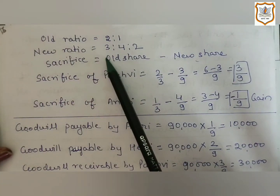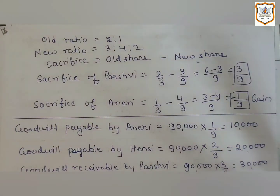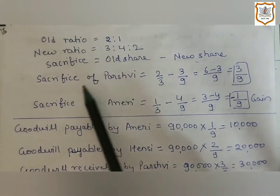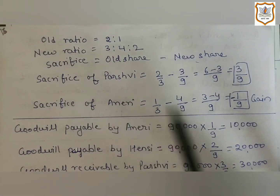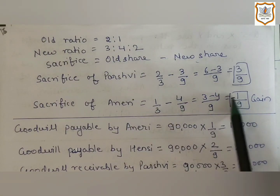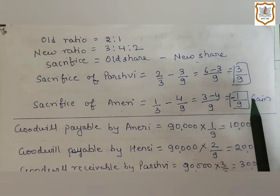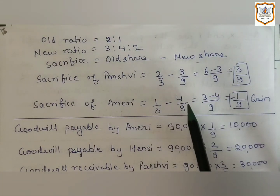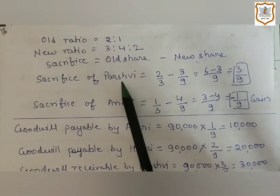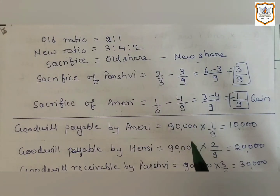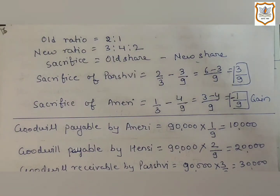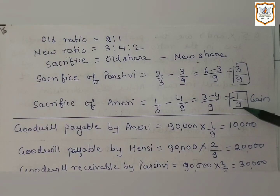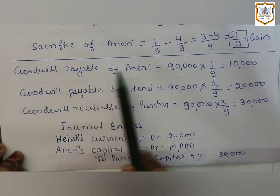The old ratio is 2:1 and the new ratio is 3:4:2. Calculating sacrifice: Parswee's sacrifice is 3/9. For Aniri, the answer comes with a minus sign, which means it is a gain — Aniri is not sacrificing but gaining. Only Parswee is sacrificing. Since Aniri gains, she will have to give goodwill by her share of gain, which is 1/9.